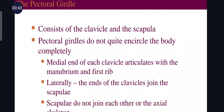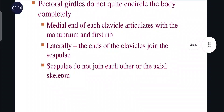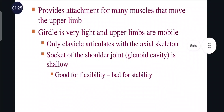Moving on to the pectoral girdle, it consists of two bones: clavicle and scapula. Pectoral girdles do not completely encircle the body. The medial end of each clavicle articulates with the manubrium and first rib, forming the sternoclavicular joint. Laterally, the ends of the clavicle join to the scapulae, forming the acromioclavicular joint. Scapula does not join to the axial skeleton. Only clavicles articulate with the axial skeleton.